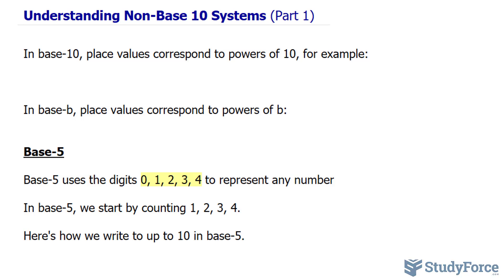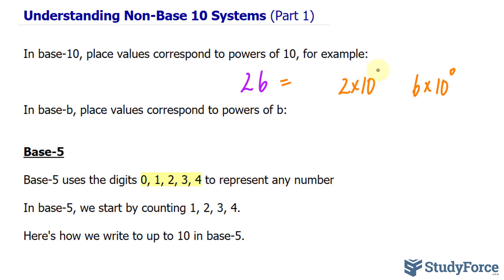In a base 10 system, which is what we use currently, place values correspond to powers of 10. So let's say you have the number 26. We have the 1's place value — we can write down this 6 as 6 times 10 to the power of 0. And in the 10's place value, we have 2 times 10 raised to the power of 1. Adding the product of these two will give you 26.